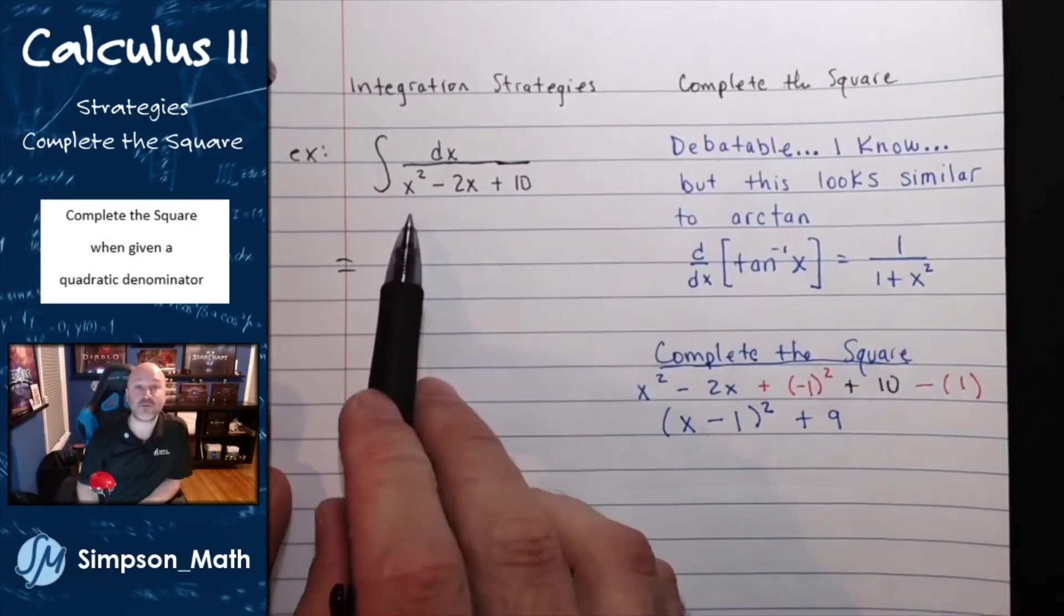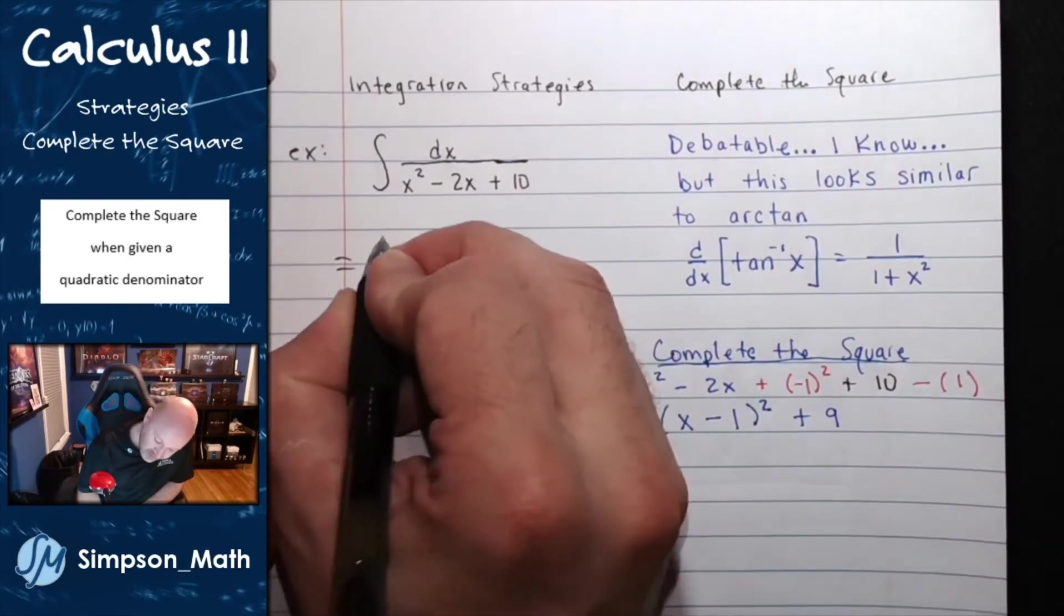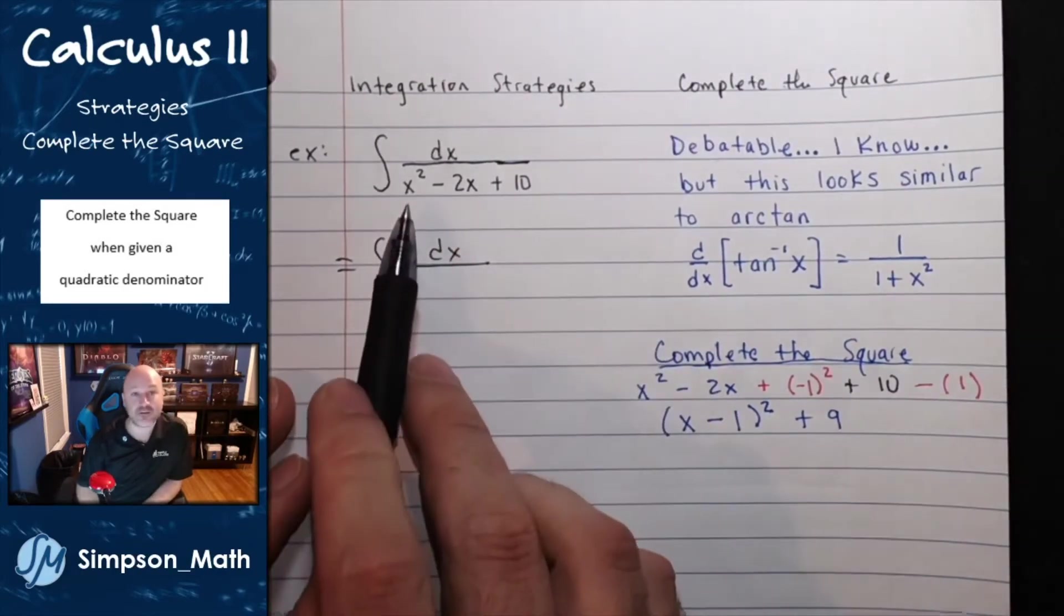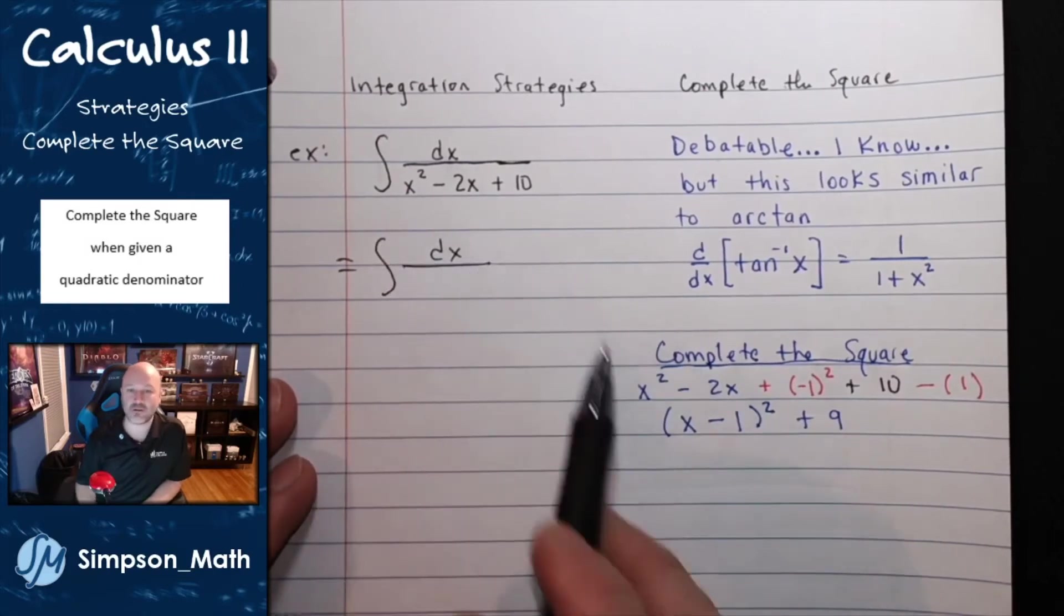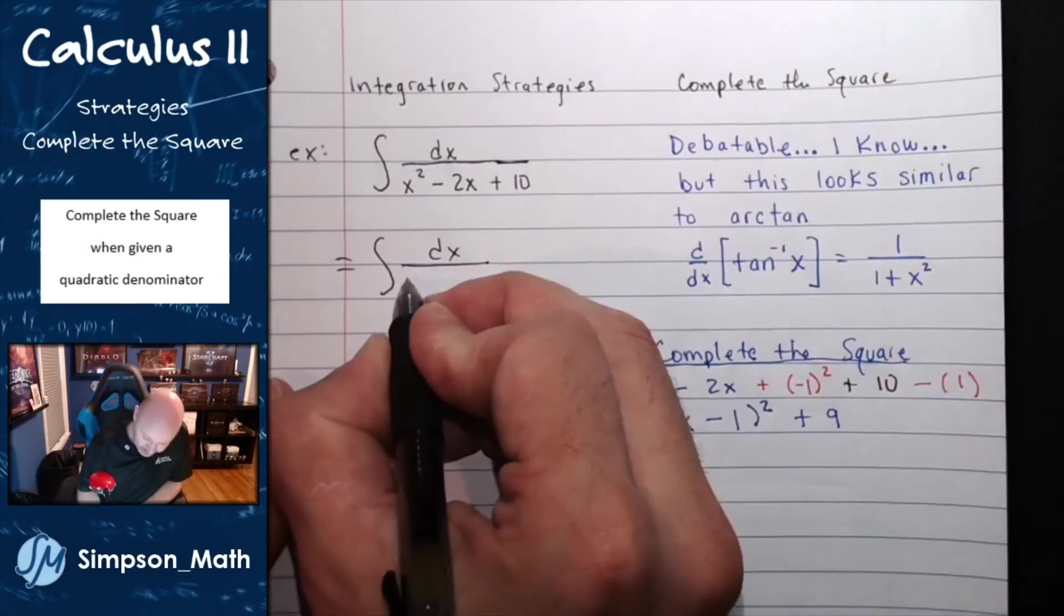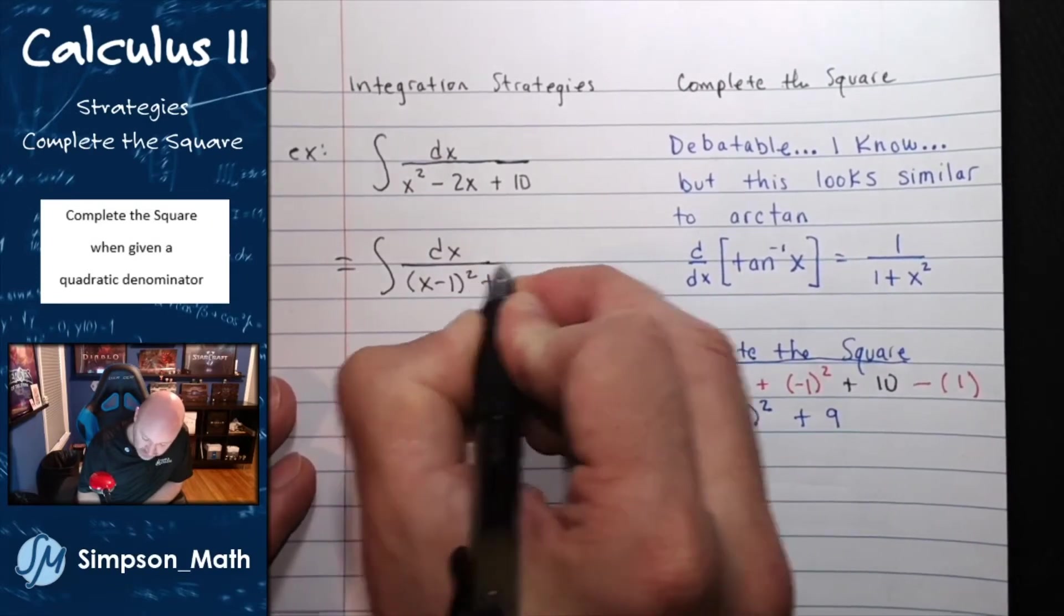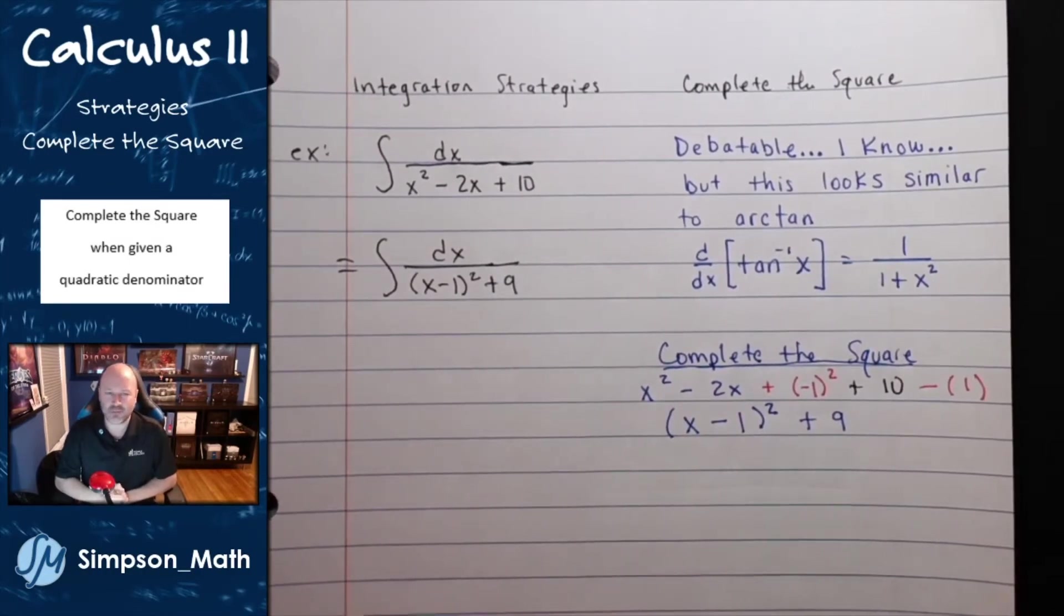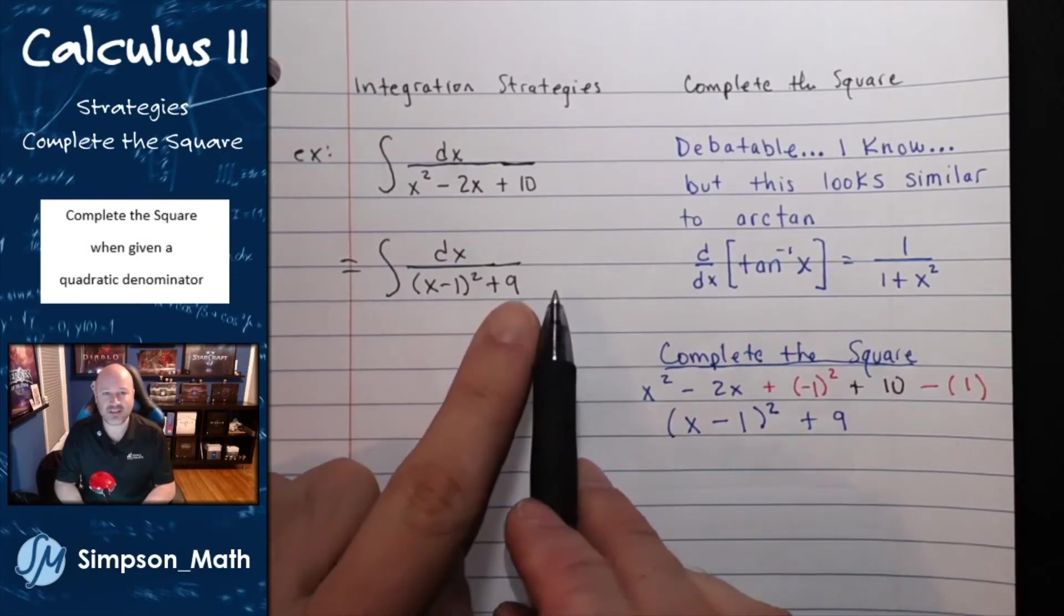Alright, I'm going to rewrite my integral using my new denominator. So I have the integral of dx, and I factored this, or I completed the square of the denominator. So now my denominator looks like this, the quantity x minus 1 squared plus 9. Now, I really want to use arc tangent, but the 9 needs to be a 1.